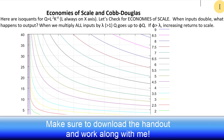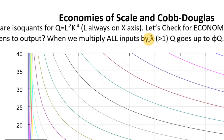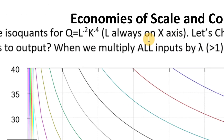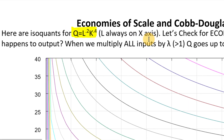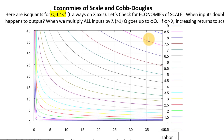Let's explore economies of scale and production, looking at Cobb-Douglas production functions. By doing this, we're going to learn a little trick so that you can tell whether a Cobb-Douglas production function has increasing, decreasing, or constant returns to scale. So let's dive in. We'll start with the production function q equals L to the 0.2 times K to the 0.4, graphing with L on the x-axis and K on the y-axis. Let's check this function for economies of scale, going through the formal definition first.